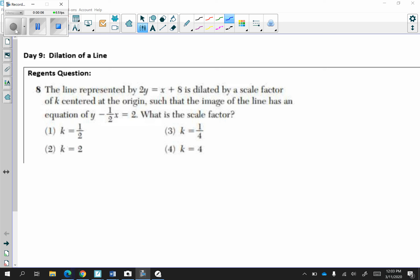Let's read the first question. The line represented by 2y equals x plus 8 is dilated by a scale factor of k centered at the origin such that the image of the line has an equation of y minus one-half x equals 2. What is the scale factor?